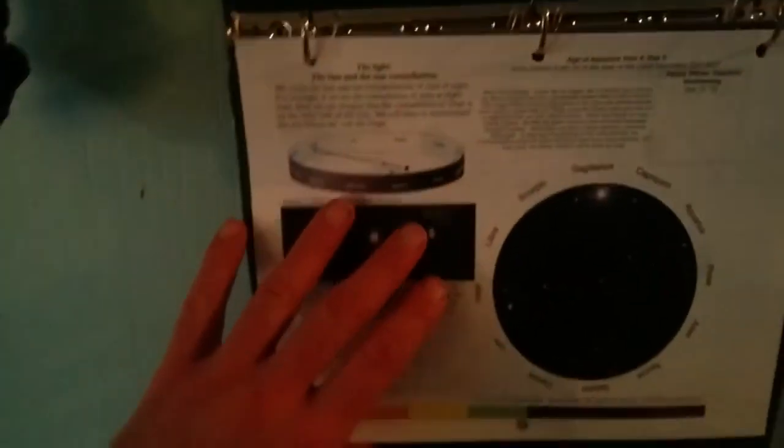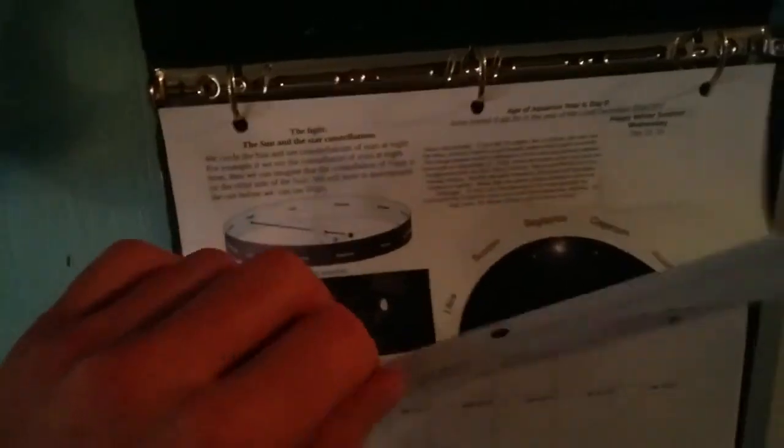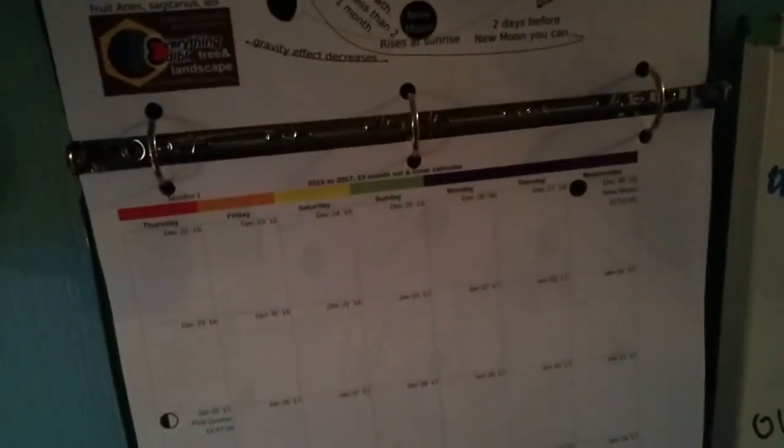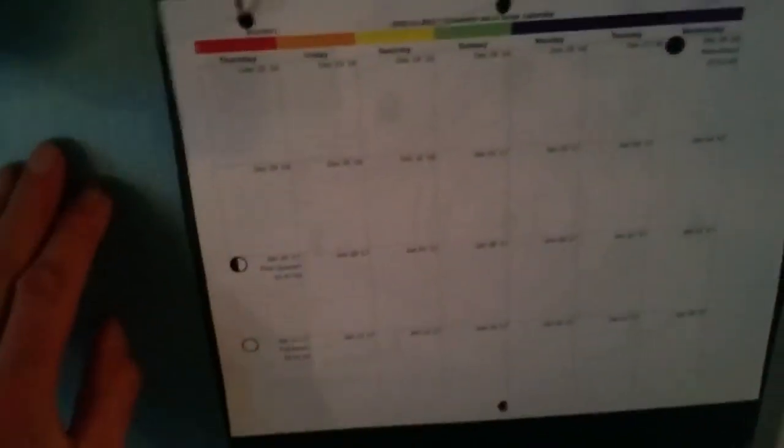So, this is a 13-month calendar. That means there's 13 months. And each month is 28 days exactly. 7 days by 4 days. I've put the moons on this calendar. The new moon, the first quarter moon, the second quarter moon, or the full moon.